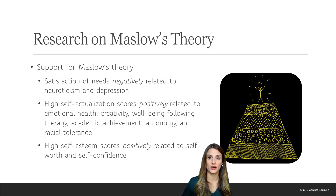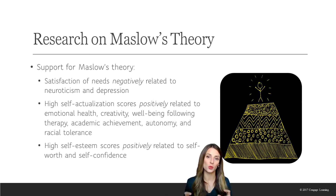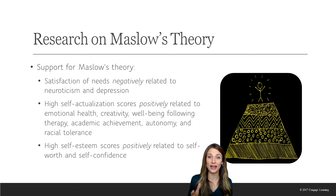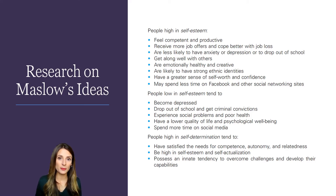Remember that his theory was based on anecdotal evidence — he picked the people he respected and analyzed their life histories. There are some studies that suggest those higher in the hierarchy experience less depression and are less neurotic than those lower in the hierarchy. There's also support for the relationship between self-actualization and positive outcomes like emotional health, creativity, well-being, academic achievement, autonomy, and racial tolerance. People who satisfy their esteem needs tend to feel good about themselves, are more likely to get job offers, get along with others, and have fewer depressive symptoms and social problems.